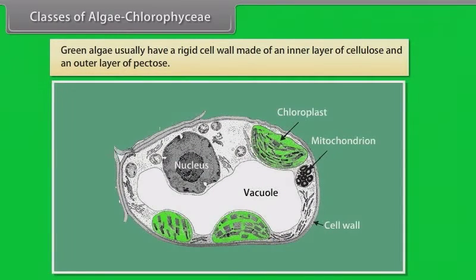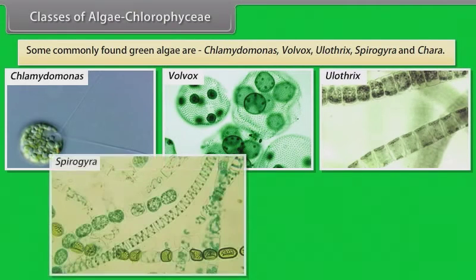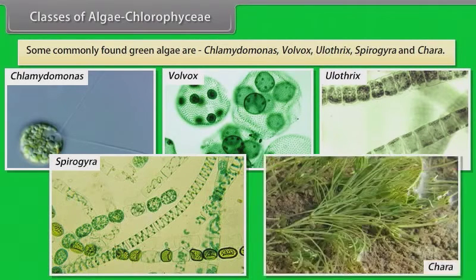Green algae usually have a rigid cell wall made of an inner layer of cellulose and an outer layer of pectose. Some commonly found green algae are Chlamydomonas, Volvox, Ulothrix, Spirogyra, and Chara.